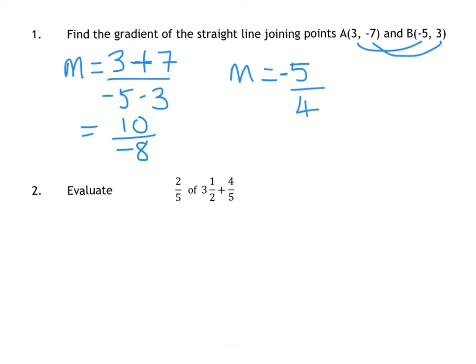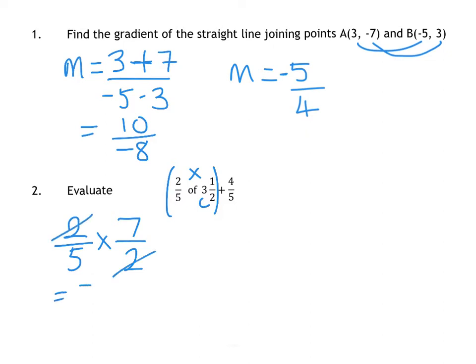Question 2 is your fraction question. Remember, 'of' stands for times, so it's really a BODMAS question, so we have to do this part first. To multiply, you have to make that 3 and a half top-heavy. So our first sum is 2 fifths times 3 and a half, which is the same as 7 over 2, because you do 2 times 3 is 6 plus the 1. That gives you 14 over 10, or the 2s will cancel, which gives you 7 over 5.